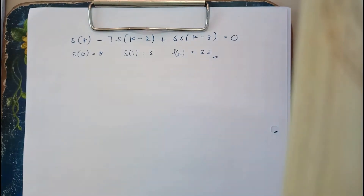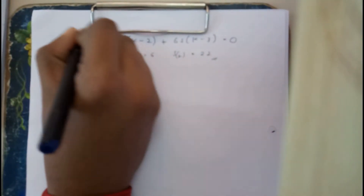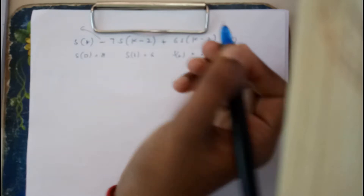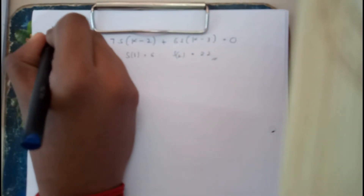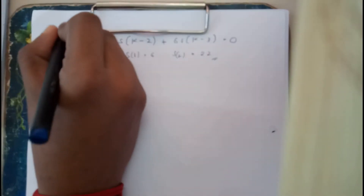From the question, note something important: there is a term missing — the k minus 1 term is not present in the question. I hope everyone understands how I am identifying that.